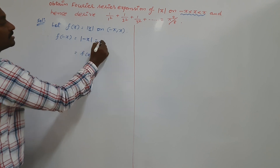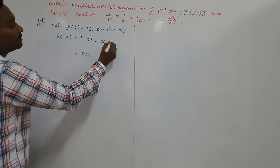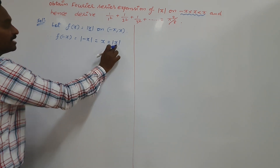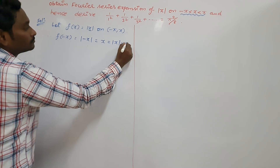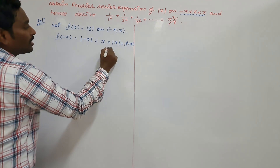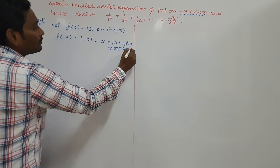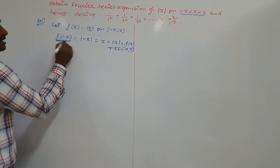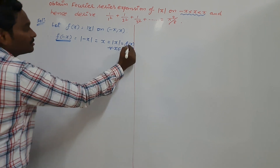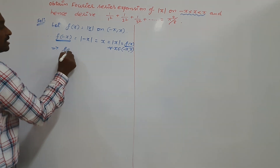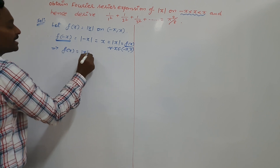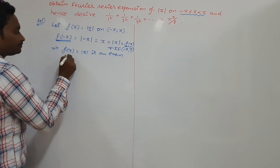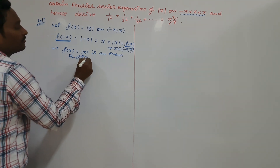What is modulus of minus x? It is equal to modulus of x, which is our given function, for all x belonging to the interval minus pi to plus pi. So here we have obtained f of minus x equal to plus f of x. Therefore, we conclude that f of x equals modulus of x is an even function.